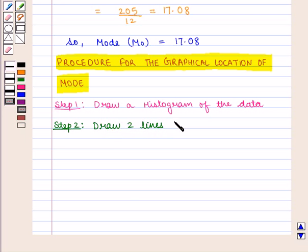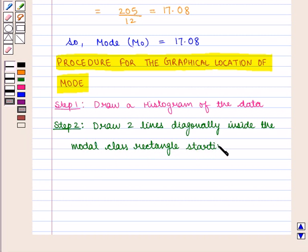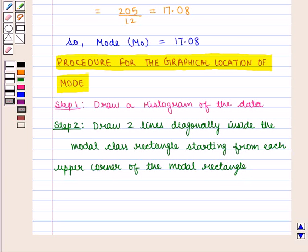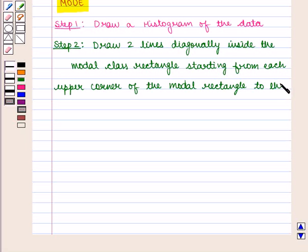The second step is to draw 2 lines diagonally inside the modal class rectangle, starting from each upper corner of the modal rectangle to the upper corner of the adjacent rectangle.